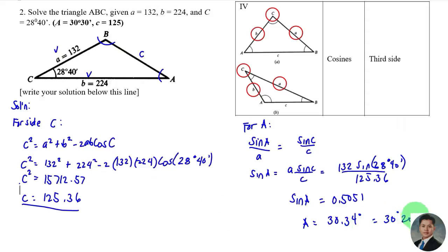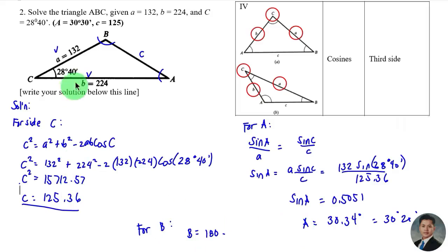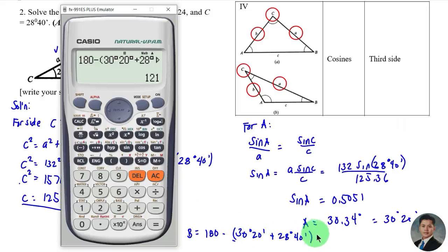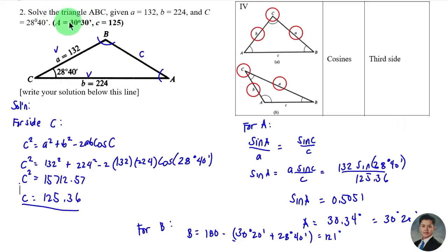Finally, angle B is found by subtracting angles A and C from 180 degrees: 180 − (30 degrees 20 minutes + 28 degrees 40 minutes) = 121 degrees. There is a slight difference from the book's answer, but these are all our answers.